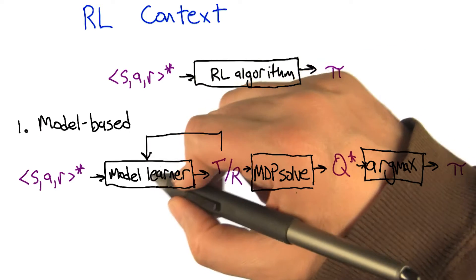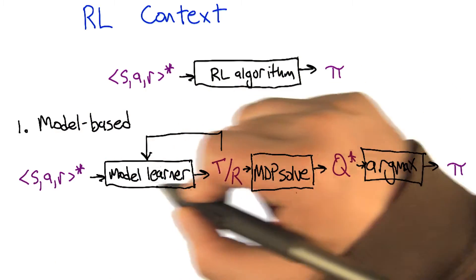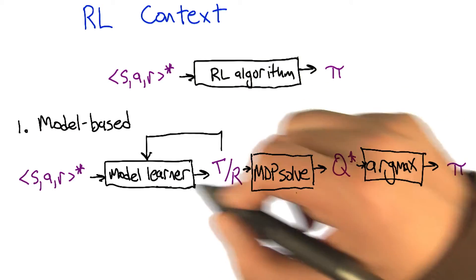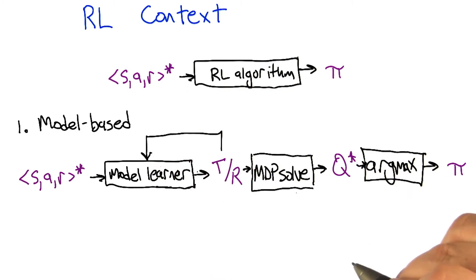And let me just add one more thing, which is that the model learner takes the history that it's seeing, but it also takes its current estimate of the transitions and rewards to produce the new estimate of the transition rewards. So this is how I want to represent the learning piece of the sequence. Does that make sense? All right, so this is one type. Now let me show you another type.